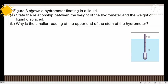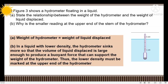Next question: Figure 3 shows a hydrometer floating in a liquid. State the relationship between weight of hydrometer and weight of liquid displaced. Why is the smaller reading at the upper end of the stem? Since the hydrometer is floating at rest, buoyant force equals weight of hydrometer, which equals weight of liquid displaced. In a liquid with lower density, the hydrometer sinks more so that the volume of liquid displaced is large enough to produce sufficient buoyant force. Thus lower density values are marked at the upper end.